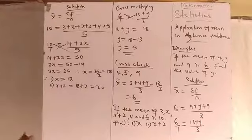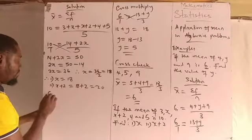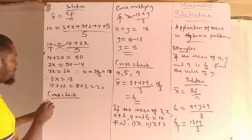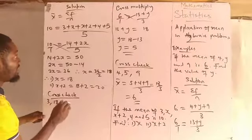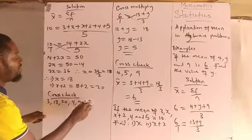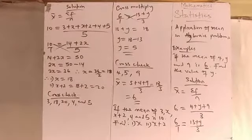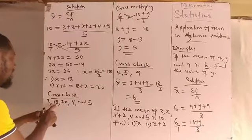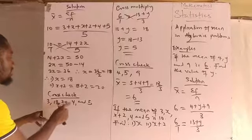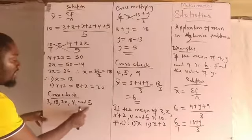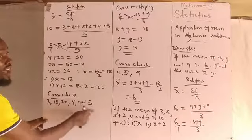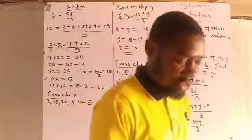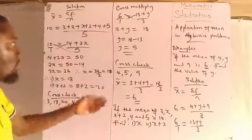We can cross-check: the actual numbers in the problem are 3, 18, 20, 4, and 5. Adding them up gives 50. Dividing 50 by 5 gives 10, which is the mean given to us from the beginning. So the answer is confirmed.